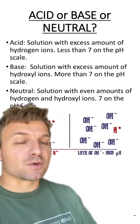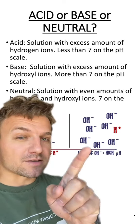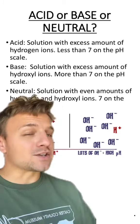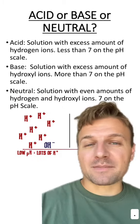That's because bases are a solution with an excess of hydroxyl ions, and acids are a solution with an excess of hydrogen ions. Bases have a pH that's higher than 7, while acids have a pH that's less than 7.